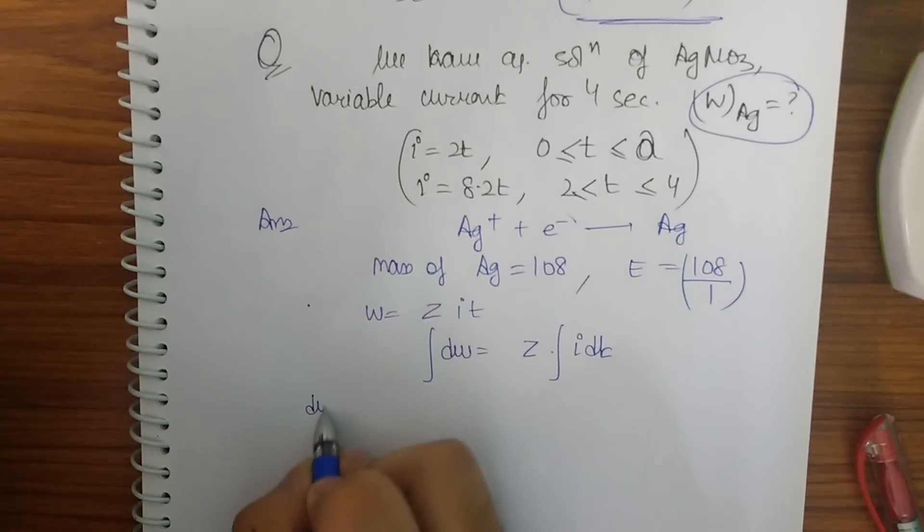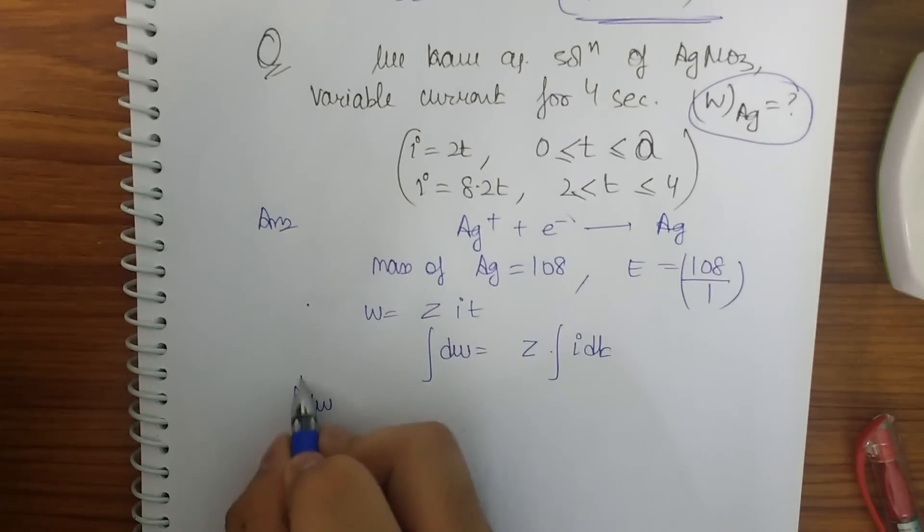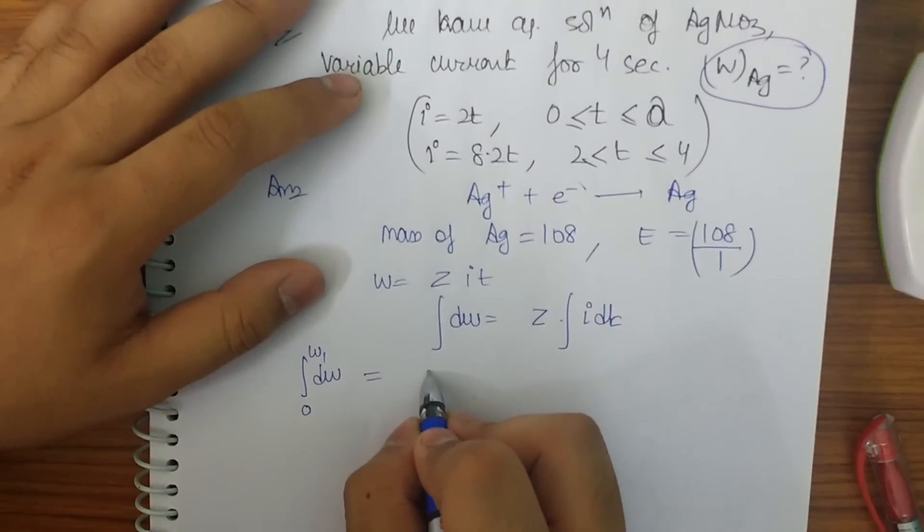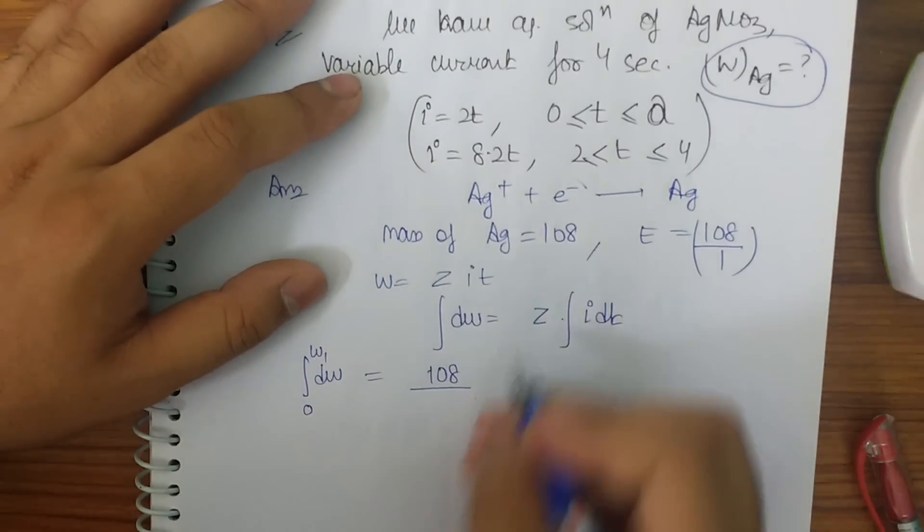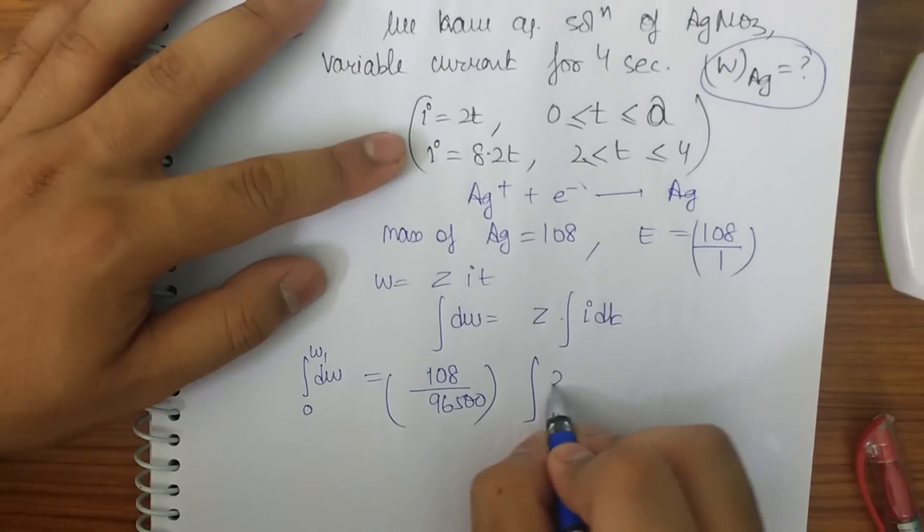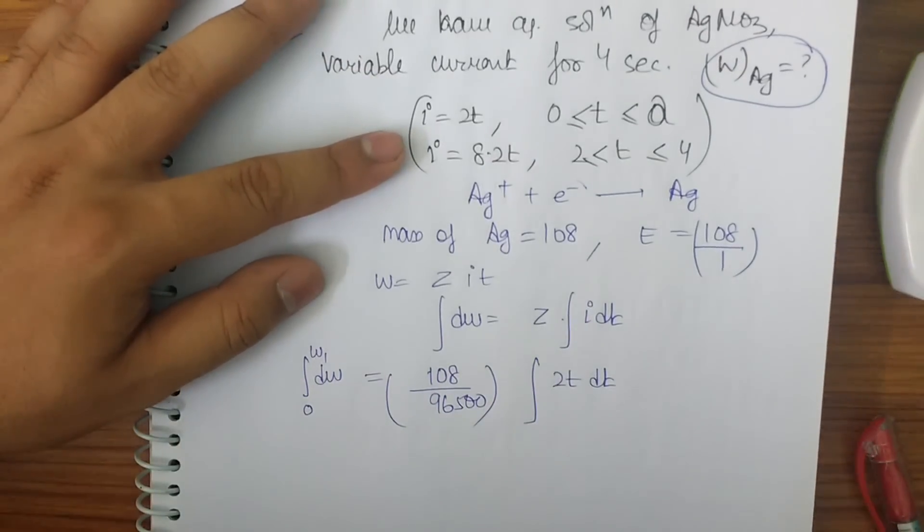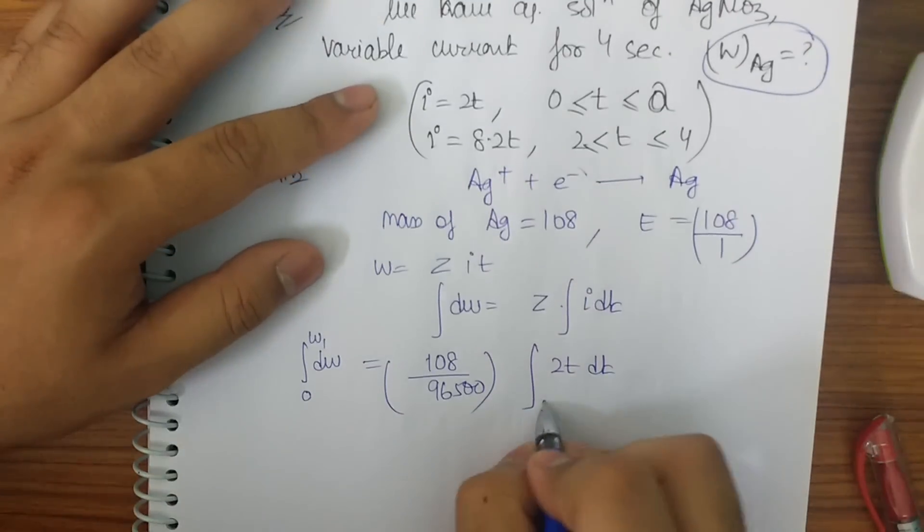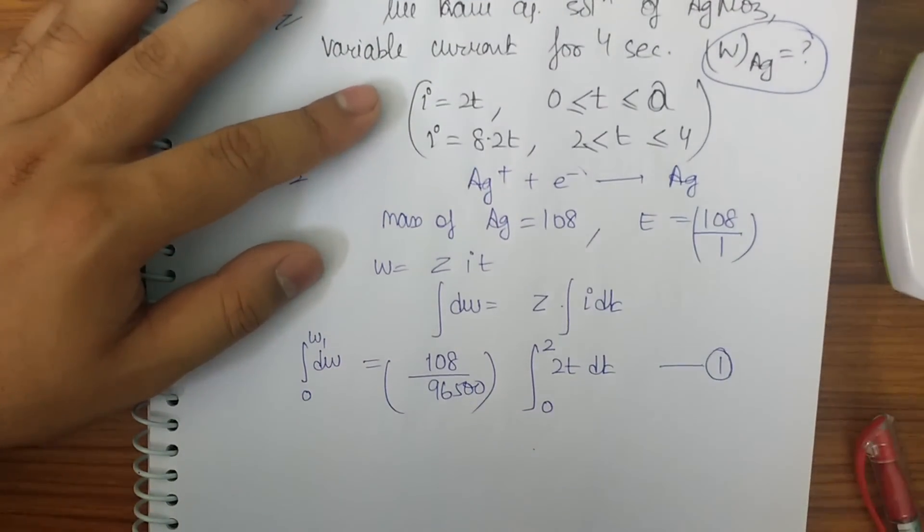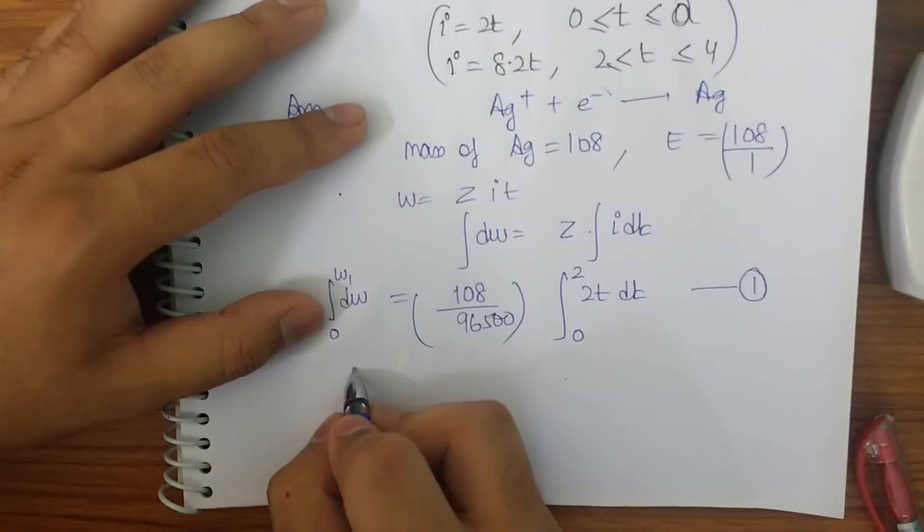We know that w is equal to z i t or basically I can write d w to be z into i d t. I am calculating d w for a smaller part. Now how to do it. So d w will be, let me calculate the value, z is equal, z will be 108 by 96500 into integration dt that i d t that is 2t dt.